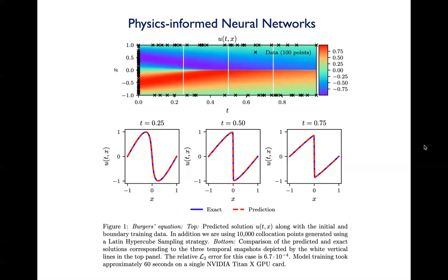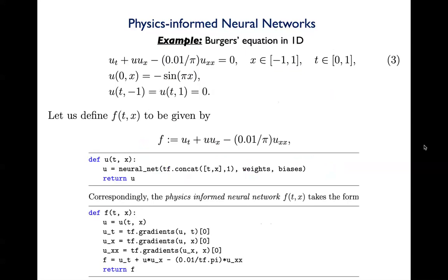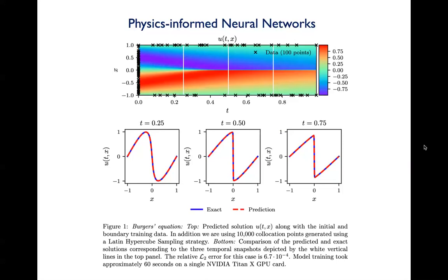This shouldn't be too impressive, but I should point out this is a deceptively simple problem. If you were trying to solve the same problem with a classical numerical method, you'd have to be very careful about how you discretize your domain in order to capture accurately the steep gradients that develop around x equals zero. Due to the small value of viscosity - 0.01 over pi - the solution develops very steep gradients at finite time. For the neural network, this is not a problem; it has the capacity to approximate this kind of irregular function, and training takes only seconds on a GPU.